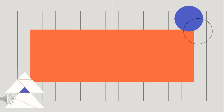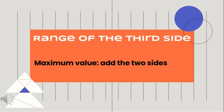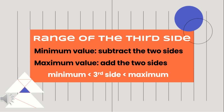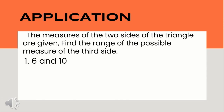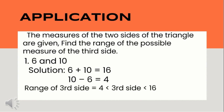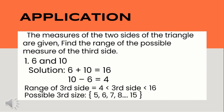What if there are only two given measures of sides? How can we identify the measure of the third side? We can identify the range of the third side by adding the two sides to get the maximum value, and subtracting the two sides to get the minimum value. We write the range as: minimum less than third side less than maximum. For example, with sides 6 and 10: 6 plus 10 equals 16 (maximum), and 10 minus 6 equals 4 (minimum). The third side is greater than 4 but less than 16, so possible values are 5, 6, 7, 8, up to 15.